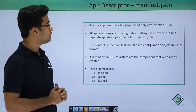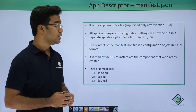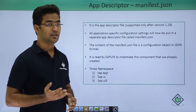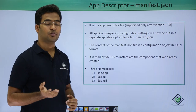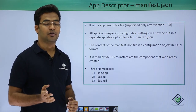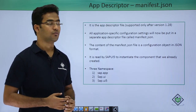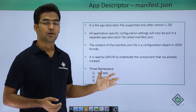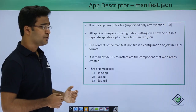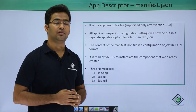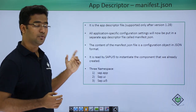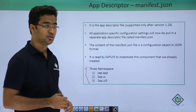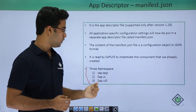The app descriptor is the manifest.json file, supported only after SAPUI5 version 1.28. Before that, routing and other settings were written in component.js. After its release, routing and navigation are written in manifest.json. All application-specific configurations are maintained there in JSON format. The file uses three namespaces: sap.app, sap.ui, and sap.ui5.